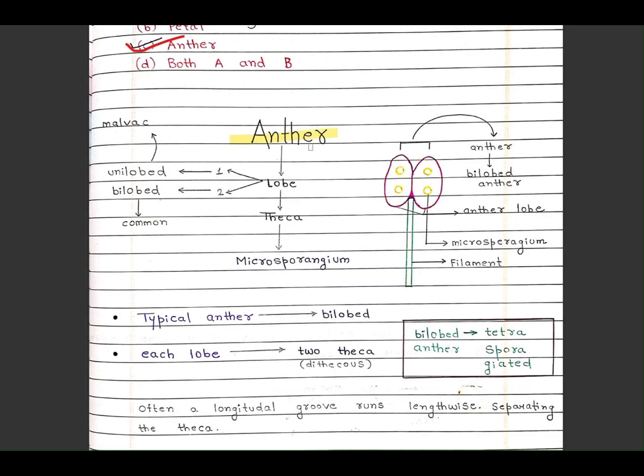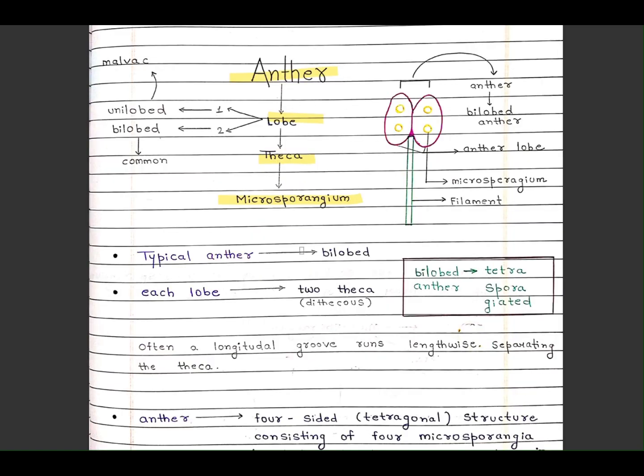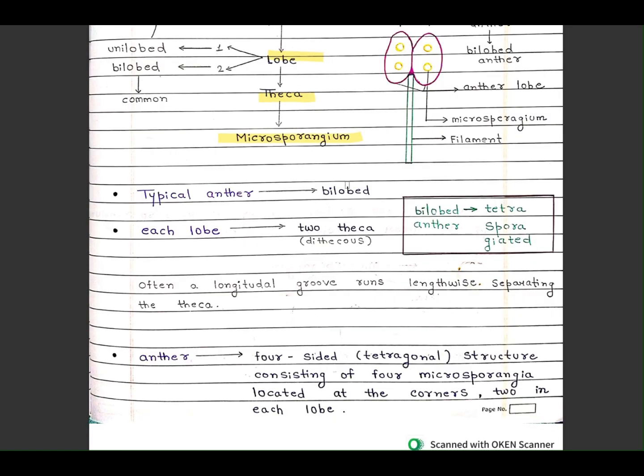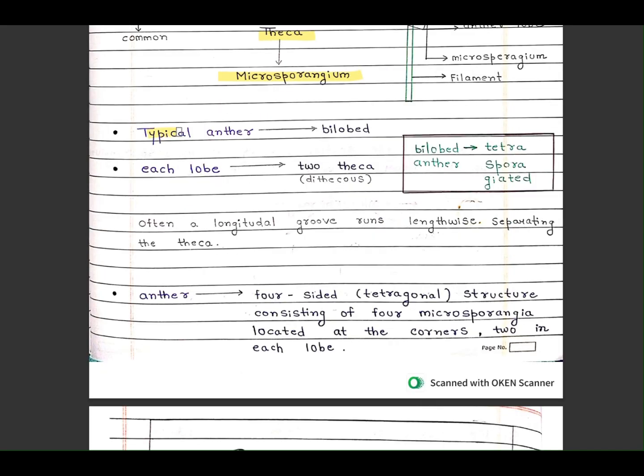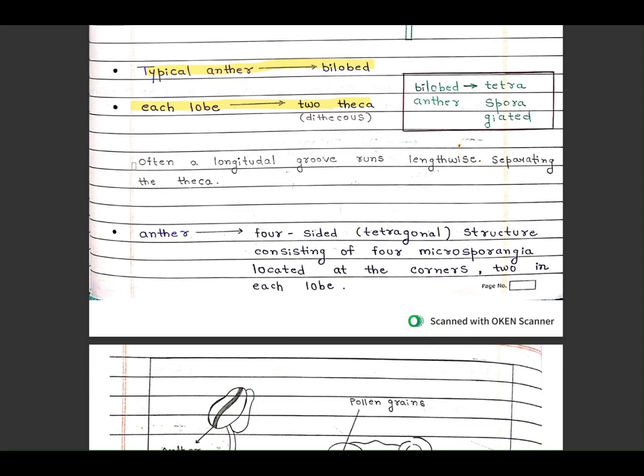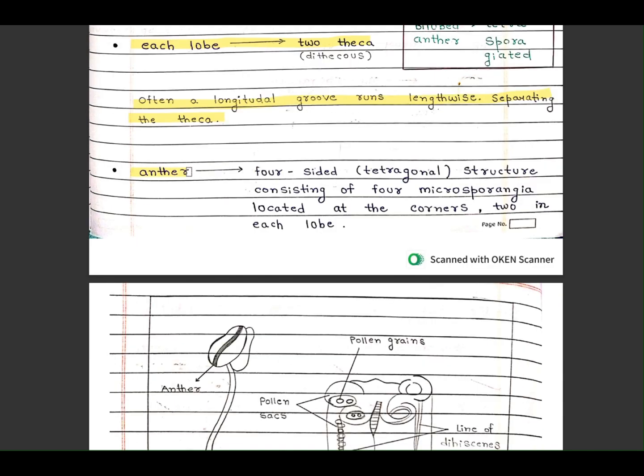Anther is bilobed with theca and microsporangium. Typical anther is bilobed, each lobe has two theca. Often a longitudinal groove runs lengthwise separating the theca. Anther is a four-sided tetragonal structure consisting of four microsporangia located at the corners, two in each lobe.